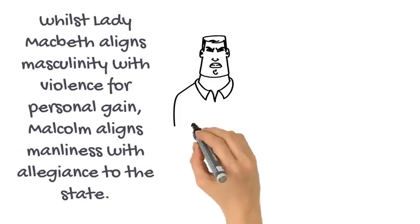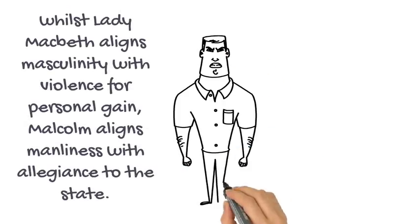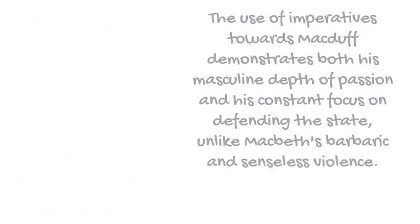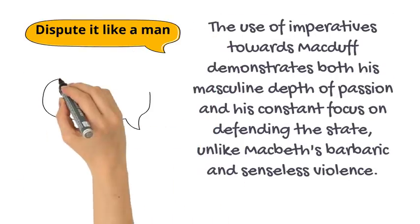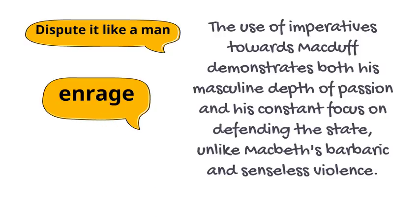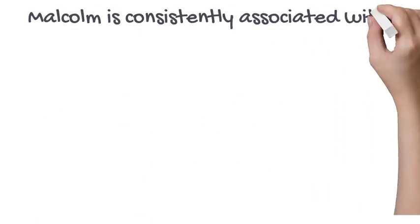Additionally, whilst Lady Macbeth aligns masculinity with violence for personal gain, Malcolm aligns manliness with allegiance to the state. The use of imperatives towards Macduff — 'dispute it like a man' and 'enrage the heart towards anger' — demonstrates both his masculine depth of passion and his constant focus on defending the state, unlike Macbeth's barbaric and senseless violence.